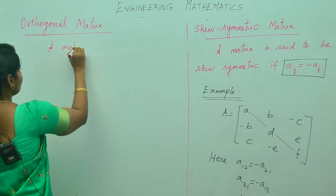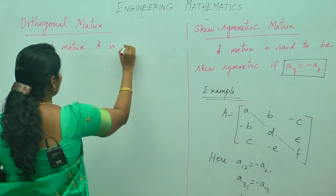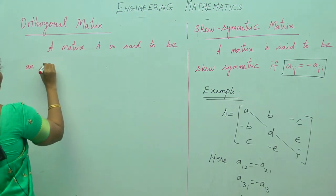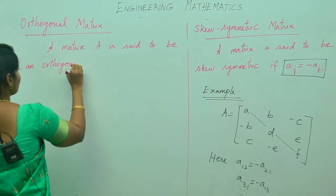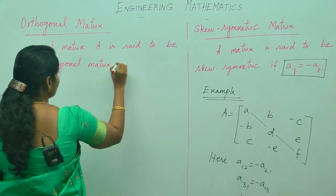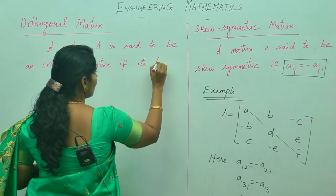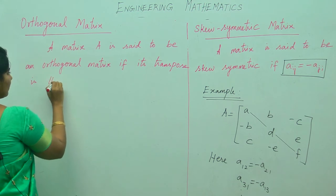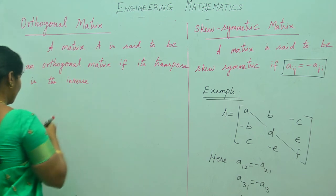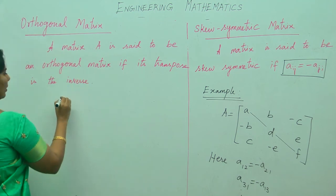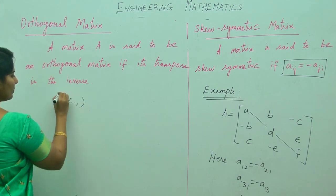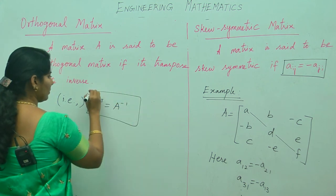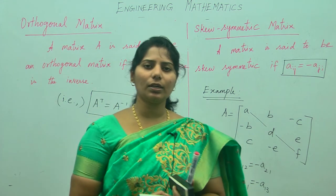A matrix A is said to be an orthogonal matrix if its transpose A^T equals the inverse A^{-1}. That is the condition: A transpose equals A inverse, and then we say that it is an orthogonal matrix.